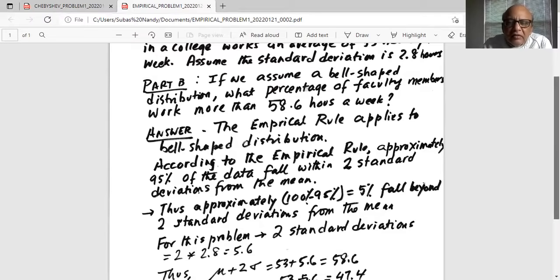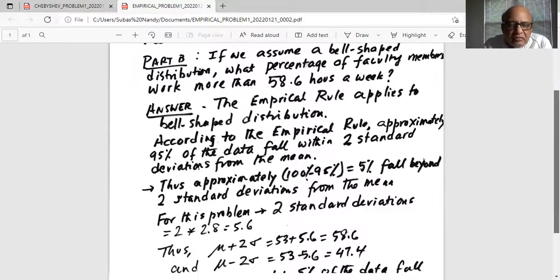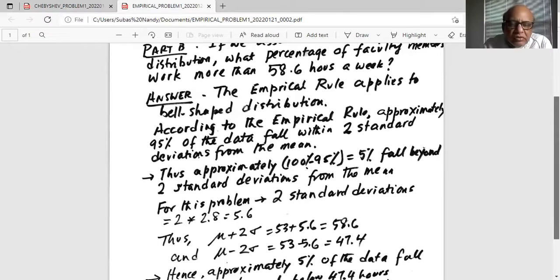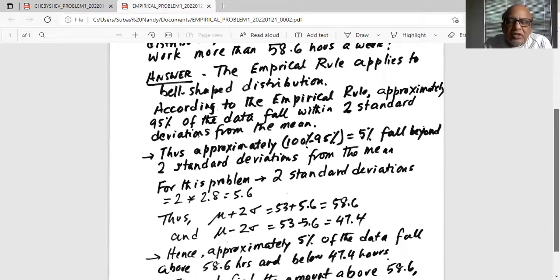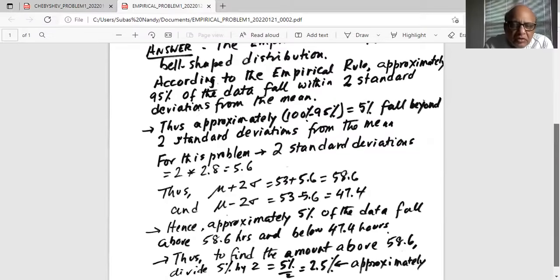Again, we know the two limits of the two standard deviations. The lower limit is 47.4 and the upper limit is 58.6. And between those two limits, approximately 95% of the data will fall.